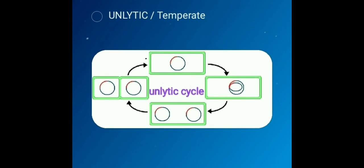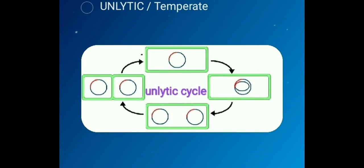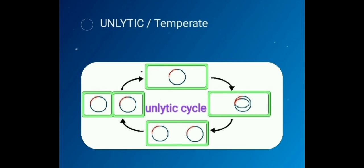Number two is the lysogenic cycle. In this case, the host bacteria remains unaffected. The phage DNA gets integrated with the bacterial chromosome and is known as the prophage.